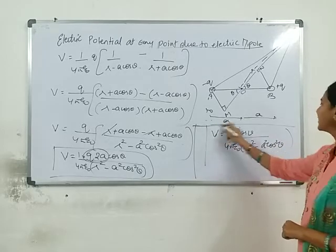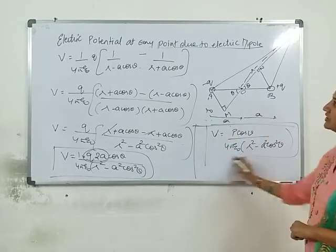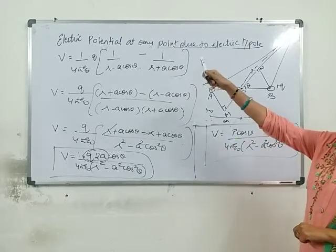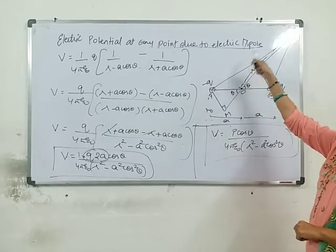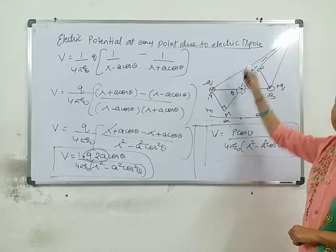The final answer is: V is equal to P cos theta upon four pi epsilon zero times r squared minus a squared cos squared theta. This is the electric potential at any point due to an electric dipole.